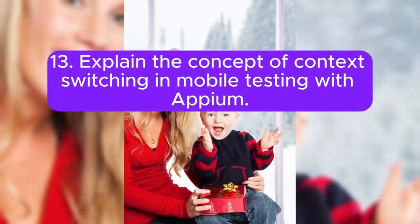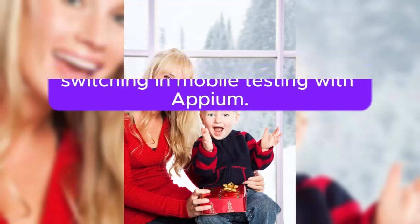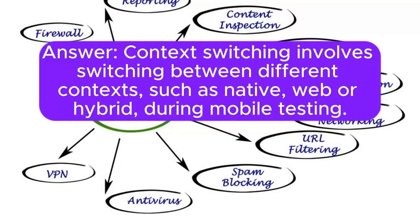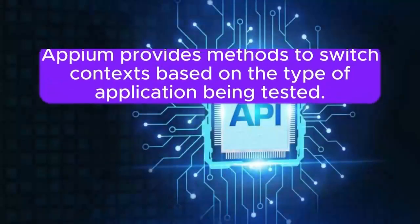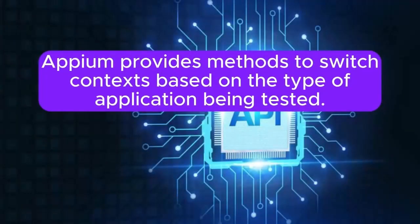13. Explain the concept of context switching in mobile testing with Appium. Context switching involves switching between different contexts, such as native, web, or hybrid, during mobile testing. Appium provides methods to switch contexts based on the type of application being tested.